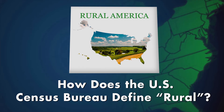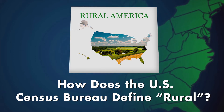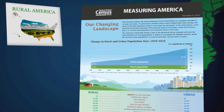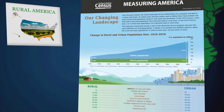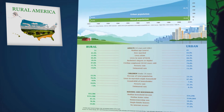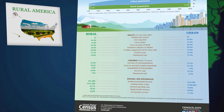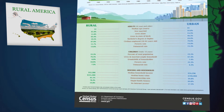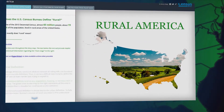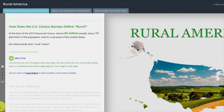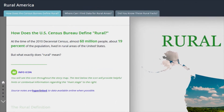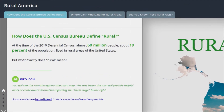How does the U.S. Census Bureau define rural? Many rural communities rely on American Community Survey, or ACS, five-year estimates rather than ACS one-year estimates because of population thresholds. This story map helps data users understand the history and definition of rural.